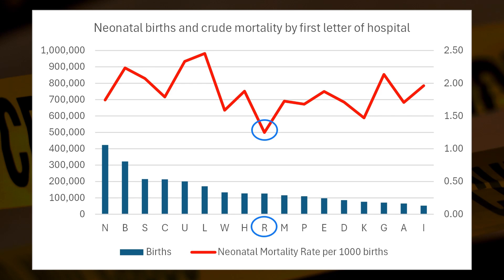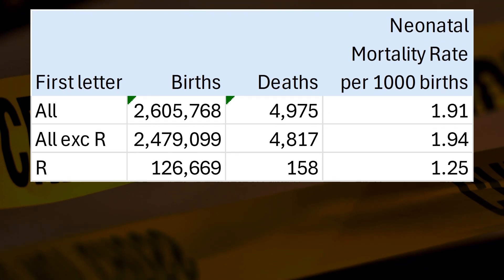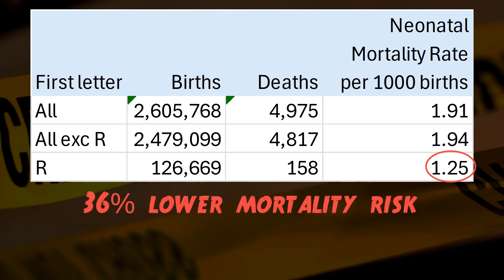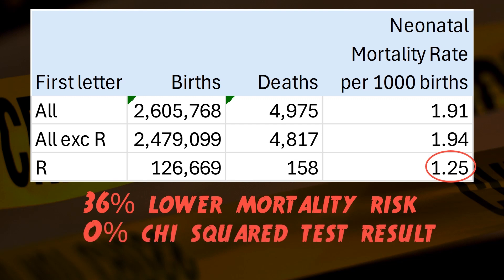This table compares the mortality rate for all hospitals combined, then all combined bar the R's, and then the R's in isolation. We can see a 1.9 per 1,000 births mortality rate for all hospitals, but just a 1.25 per 1,000 rate for R's. That's a 36% lower mortality rate, which is huge. If we test the R's on the hypothesis that they have the same mortality rate as all the other hospitals, we get a very strong fail on the chi-squared test — we're looking for more than 5% and we get 0%, so clearly a statistically significant result. Hospitals with a first letter of R are just way better than the others. If we could get all the hospitals down to this same mortality rate, there would be hundreds of neonatal lives saved each year going forward.